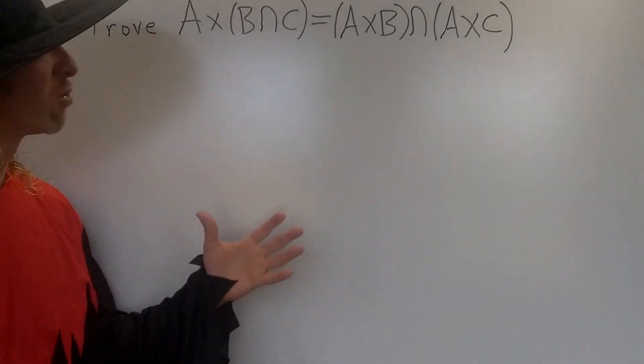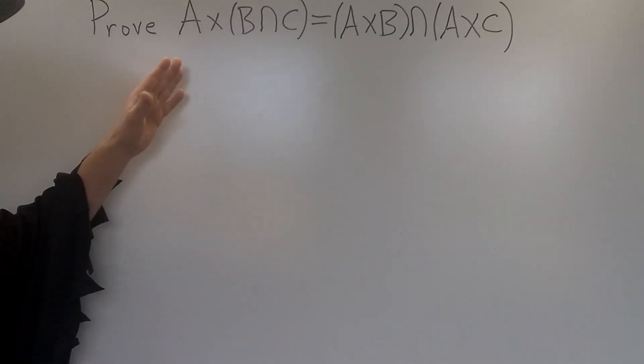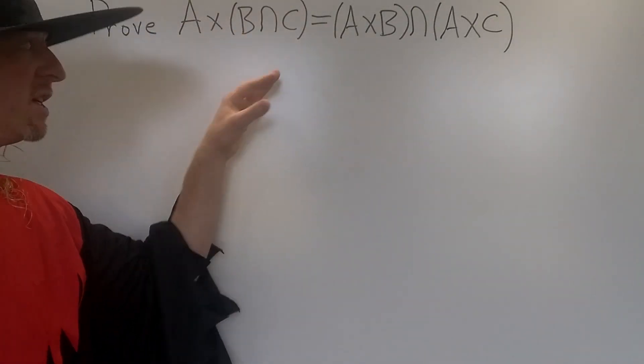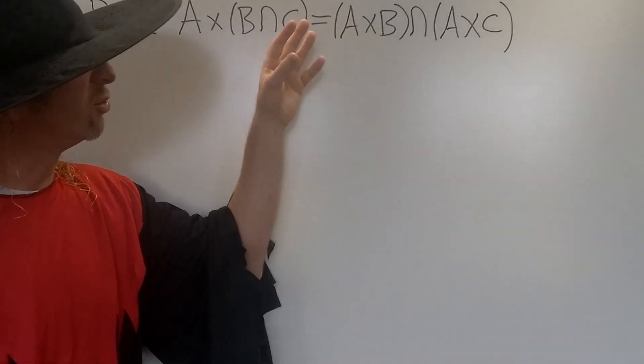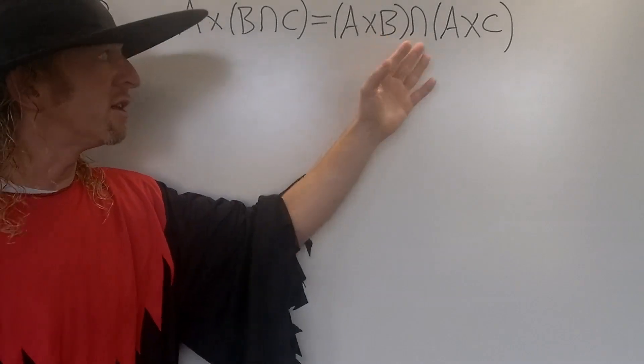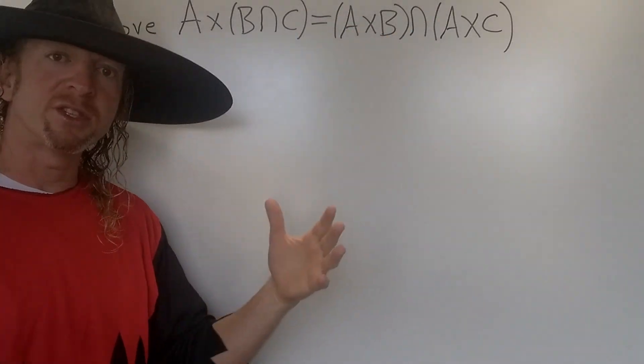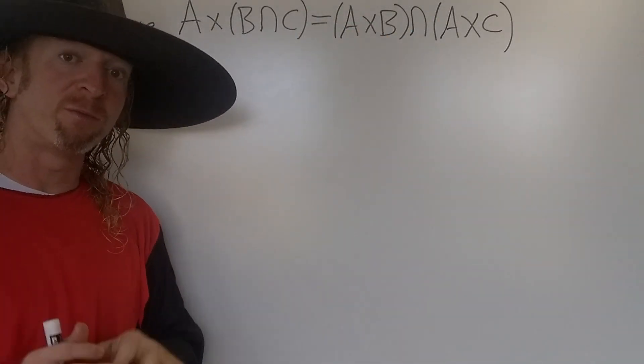Hey, what's up YouTube? In this problem we're going to prove that A cross B intersection C is equal to A cross B intersection A cross C. Let's go ahead and go through the proof.